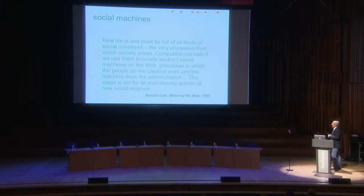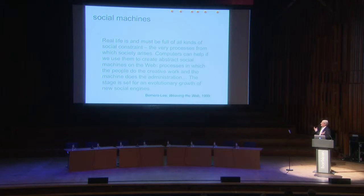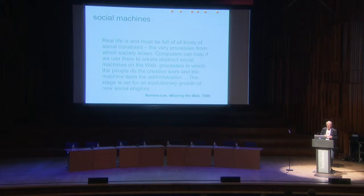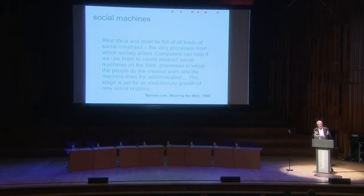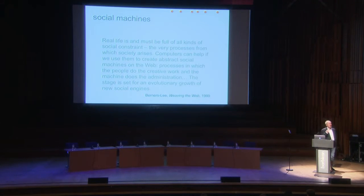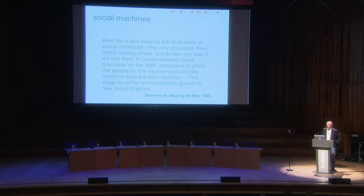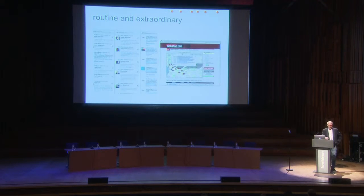In fact, Tim Berners-Lee had noticed this in his book Weaving the Web. He talks of the fact that real life is full of all kinds of social constraint — the actual process from which society arises. And if we can use computers to support some of the abstract social processes that we engage in, and if the machines are doing the administration and the people are doing the creative stuff, you could get a whole new class of what he called social engines. The social machines we see around us range from the mundane to the extraordinary, from Twitter on the one hand to the example of Ushahidi.